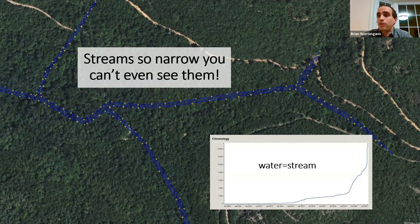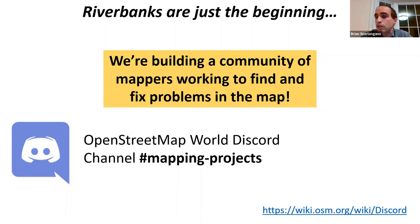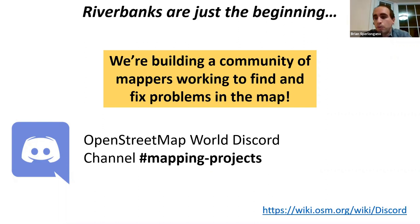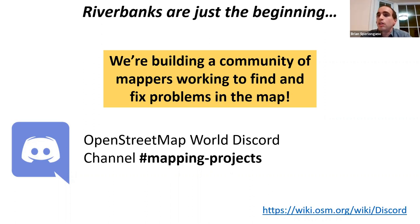There's nothing that builds a community better than having a project everyone can actively participate in — whether it's map editing, writing proposals, or sharing tips on analyzing and manipulating the database. We're slowly building a vibrant community of mappers interested in tagging modernization, reaching out to local communities around the world. We hope rivers is just the first step in ongoing worldwide efforts to improve the database. Join us on the OpenStreetMap World Discord server in the #mapping-projects channel.